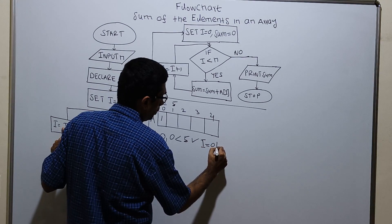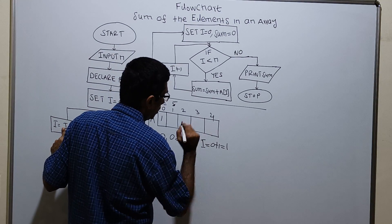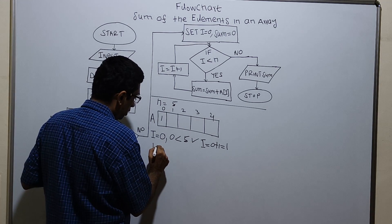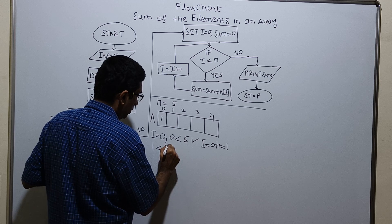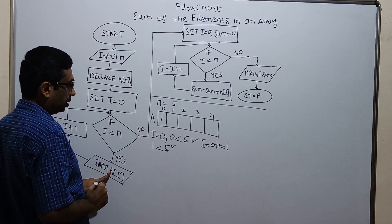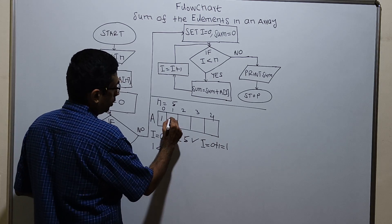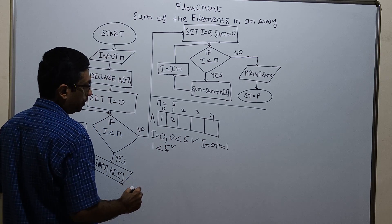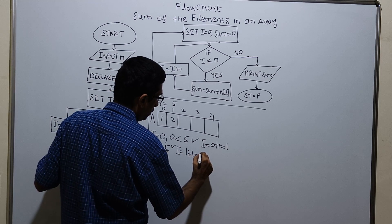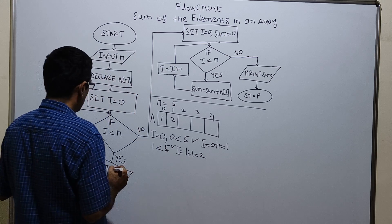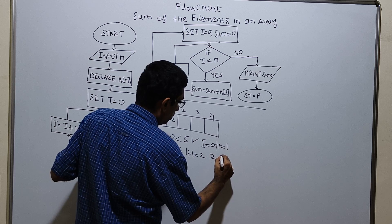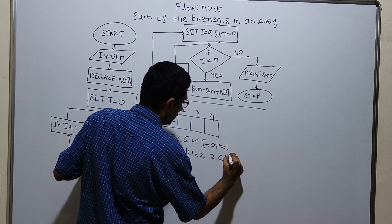I am checking the condition: i equal to 1. This is true. Input a of i, so a of 1. i value is 1. I am storing the value 2. i equal to i plus 1. i equal to existing value of i equal to 1. 1 plus 1 which is equal to 2. Now I am checking the condition i less than n: 2 less than 5, the condition is true.